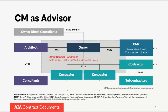Now this is a relationship diagram that shows the relationships that occur when you have a construction manager as advisor delivery model. The owner may still have other owner-direct consultants — perhaps a geotech, surveyors, or similar disciplines. The owner is also going to engage an architect who creates a design team. The owner also engages the CM as advisor, or CMA.